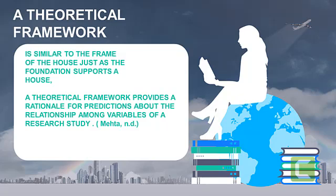The theoretical framework may either be found in Chapter 1, before the statement of the problem, if a certain theory is exposed or to be proven, or in Chapter 2, if the theory is to be formulated or developed as a result of the review of related literature. However, its location depends upon institutional policy.